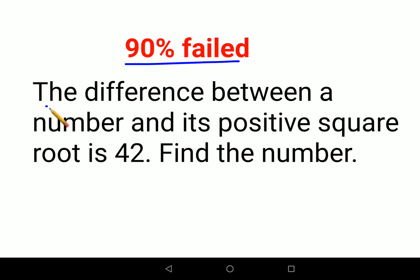The question is: the difference between a number and its positive square root is 42. Now the first thing whenever you come across any word problem, like I always say, is try to represent the entire word problem in terms of a mathematical statement. Let's understand how to do that.